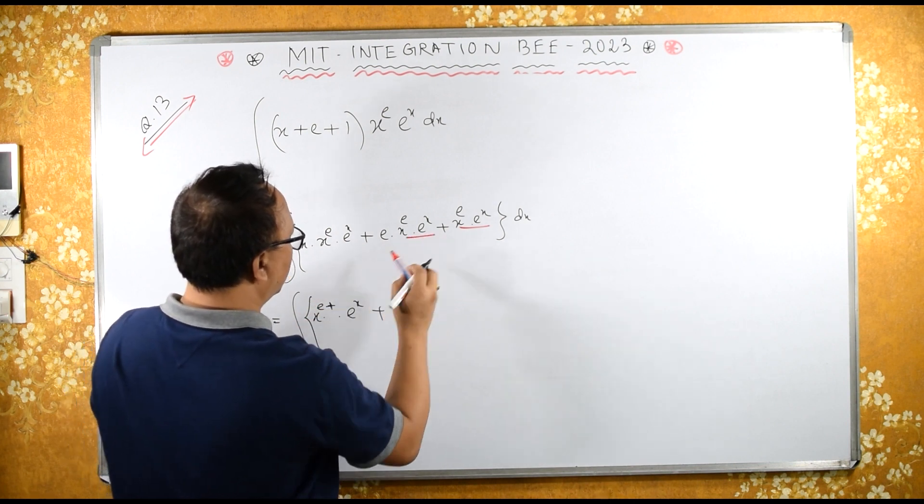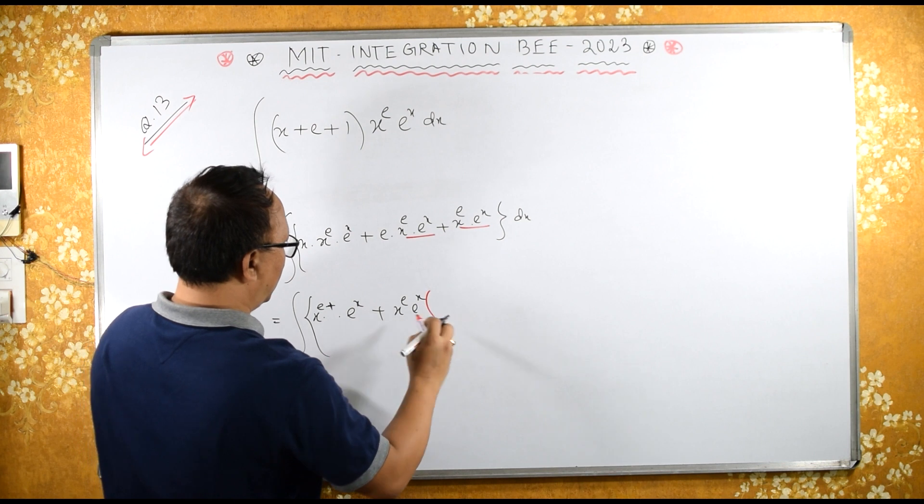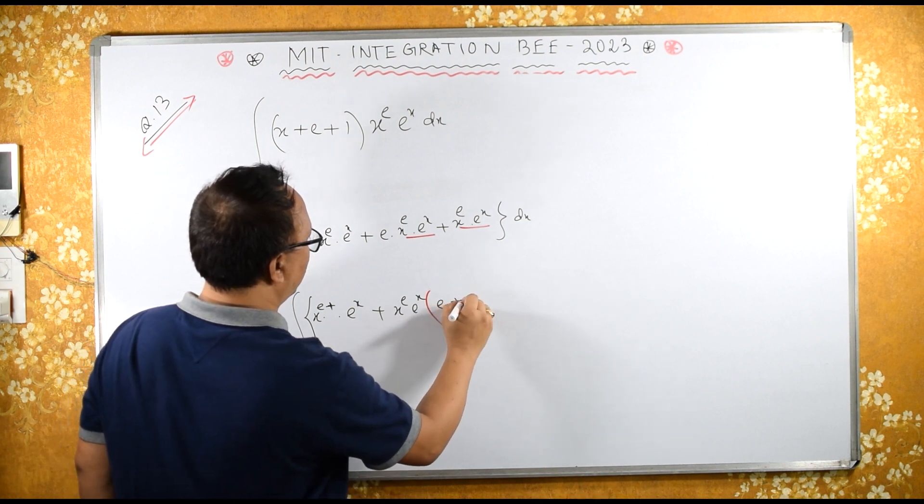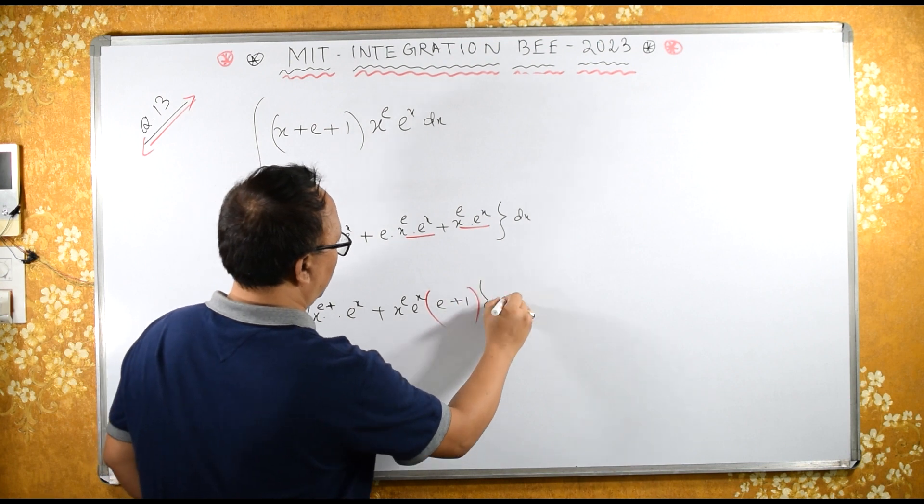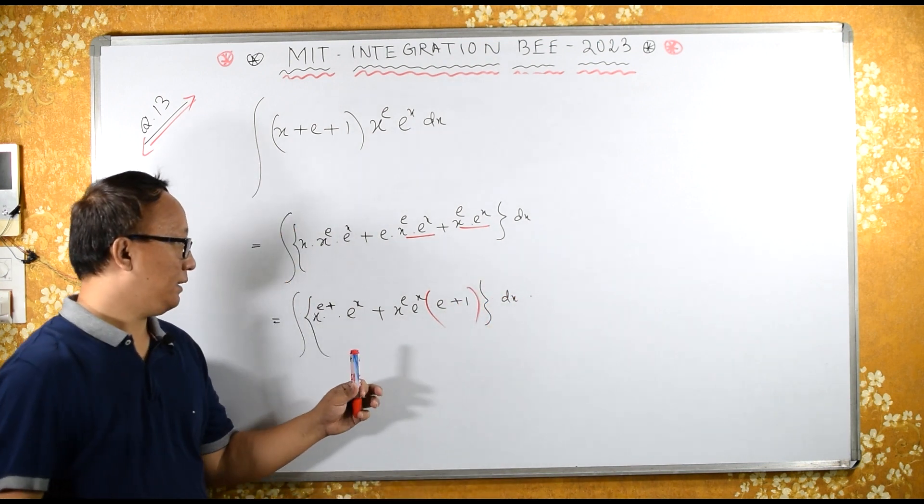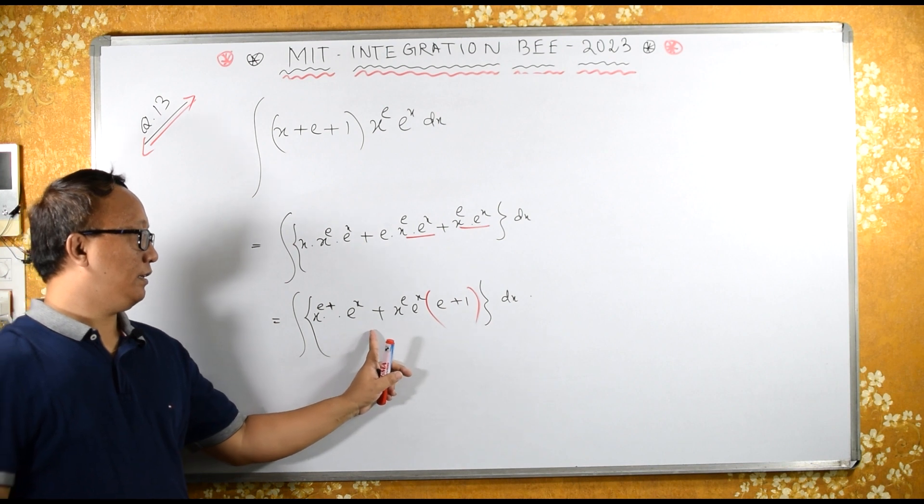If I take x raise to e, e raise to x common, then I have e plus 1 dx. Look at this, this is what - this is the differentiation of this.